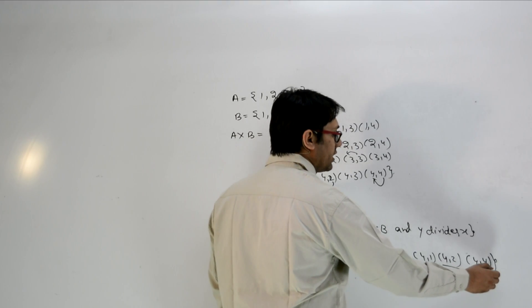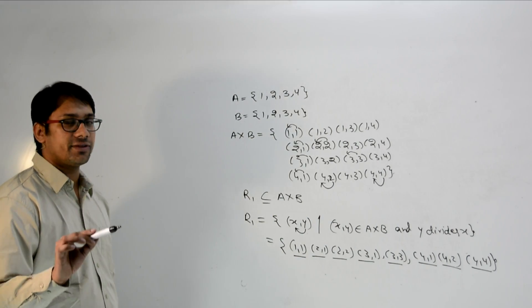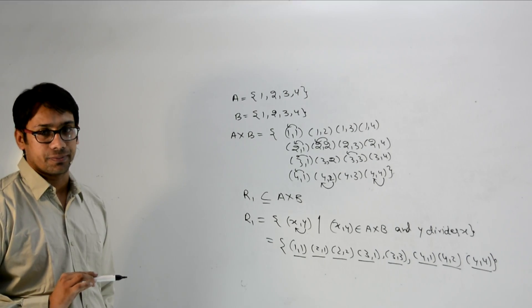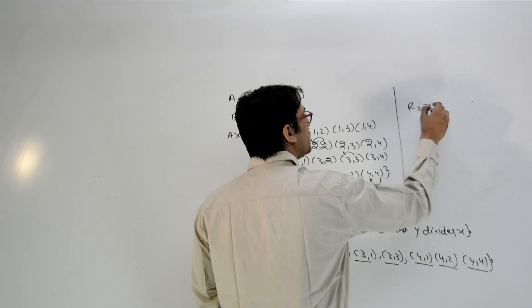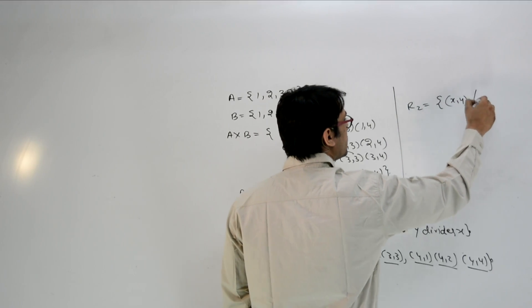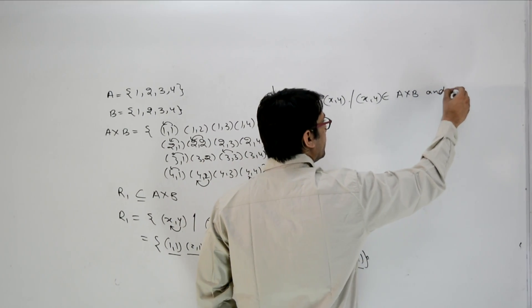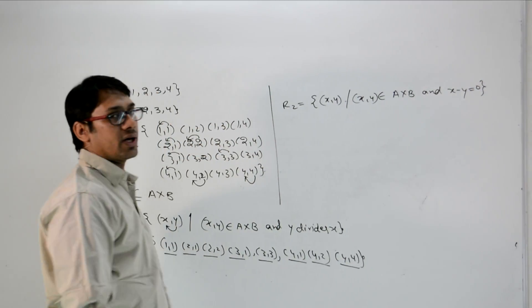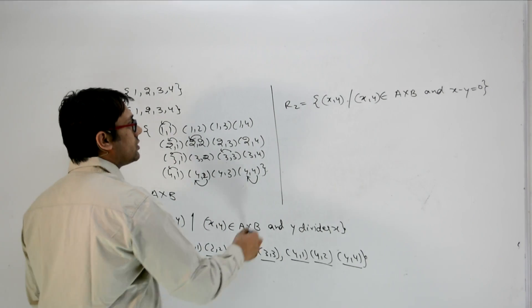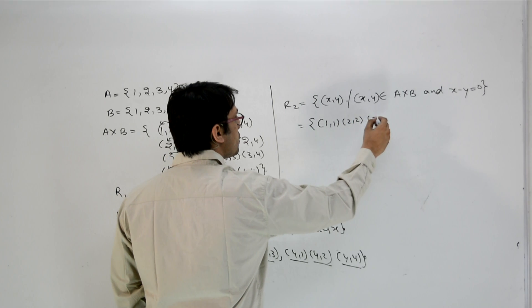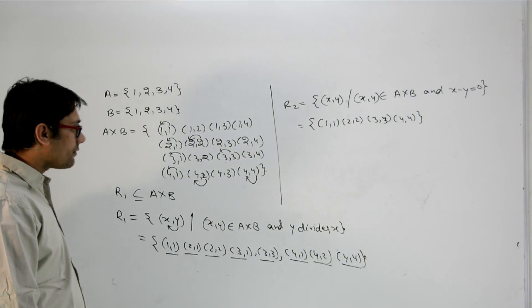So how many elements are there? One, two, three, four, five, six, seven, and eight — there are eight elements. Whenever we define a relation, it will always be a subset of the cross product and will satisfy some kind of condition. For example, I can also define a relation R2 over A×B: R2 = { (x, y) | (x, y) ∈ A×B and x − y = 0 }.